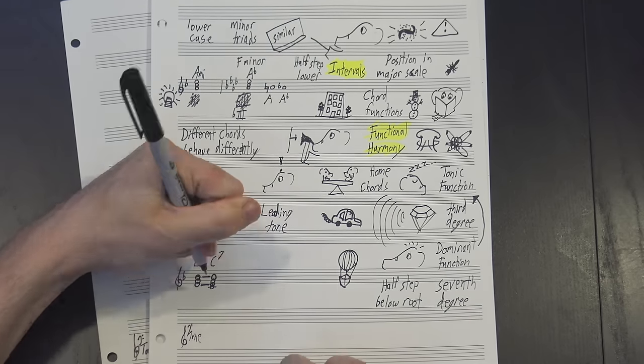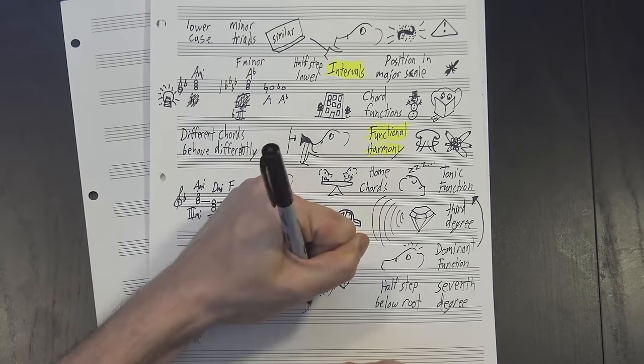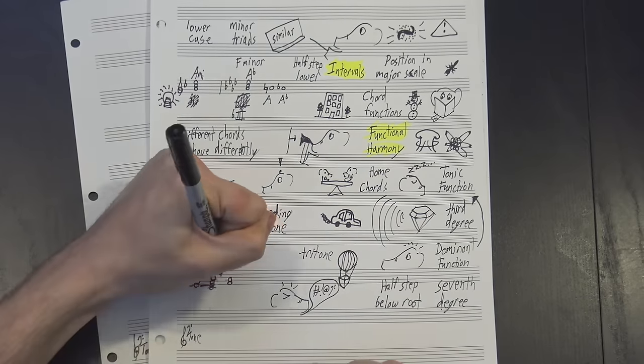Dominant function chords also often include the fourth degree of the scale, which, combined with the leading tone, creates a tritone - a very unstable interval that makes the whole chord want to collapse.